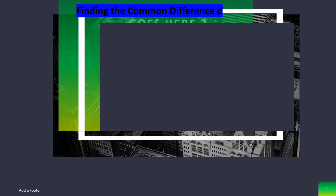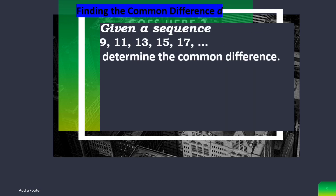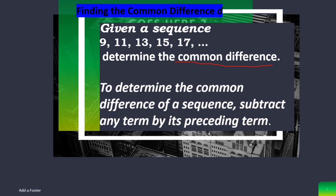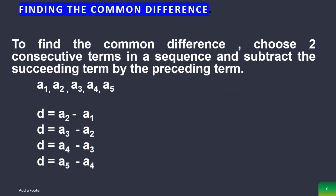Now let's begin with finding the common difference. If you are given a sequence 9, 11, 13, 15, 17, and so on, and you are tasked to find the common difference — to find the common difference, all we have to do is subtract any term by its preceding term.